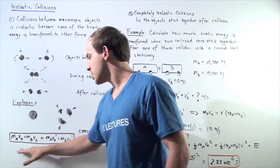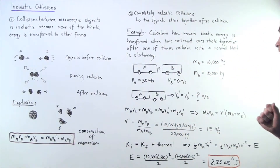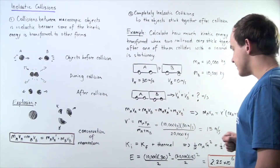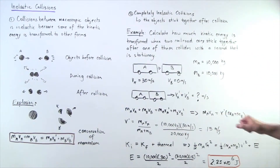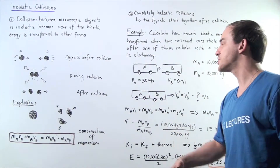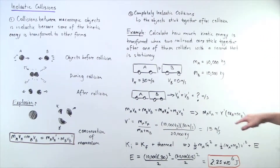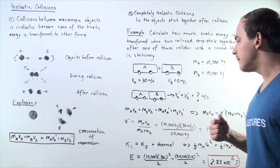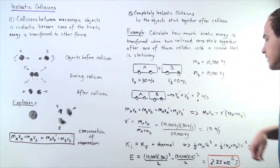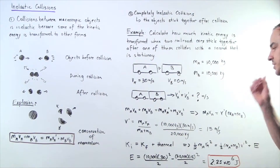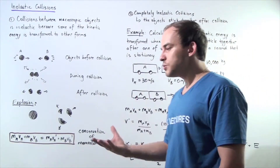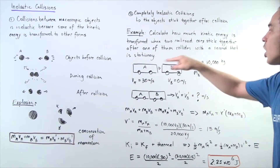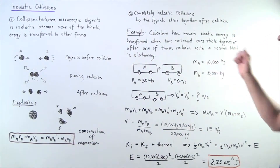Using the conservation of momentum, we can solve for our final velocity. Since V_B is zero, that term cancels out, and we're left with M_A times V_A equal to V-prime multiplied by the sum of the two masses. Solving for V-prime: 10,000 times 30 divided by 20,000 equals 15 meters per second. So the final velocity of our two objects is 15 meters per second, because in a completely inelastic collision car A and car B stick together and move as one after the collision.